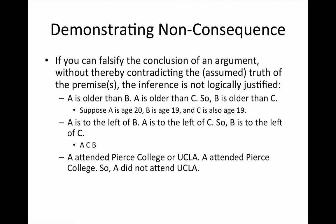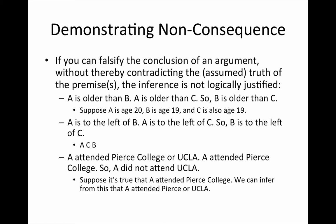A less intuitive example is this one: A attended Pierce College or UCLA; A attended Pierce College; so A did not attend UCLA. This tends to be tricky because we think of 'or' as exclusive — as in you can have one but not both. That's not the case in logic. Think about it this way: suppose it's true that A attended Pierce College. We can infer from this that A attended Pierce or UCLA, because all that's required to make the 'or' sentence true is that at least one of the sentences in the disjunction is true. So knowing that A attended Pierce College doesn't tell us anything about whether or not A also attended UCLA.